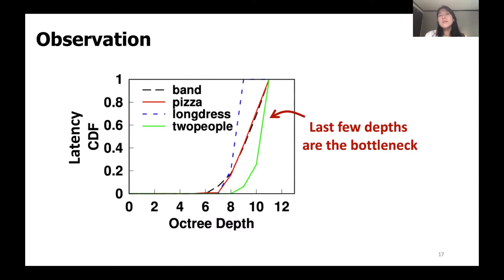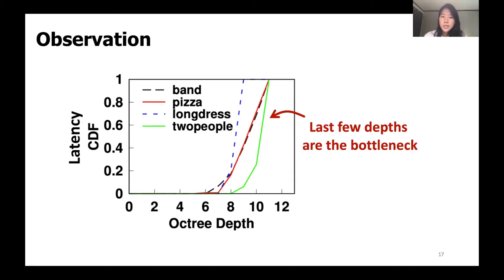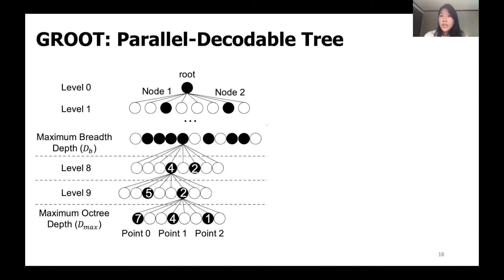This was a simple example, but we observed that when the tree goes deeper and the number of nodes increases, latency increases significantly. The cumulative distribution function of decoding latency shows that latency mainly resides in the last two to three depths, generating a bottleneck. This observation gives us insight to design a new compression scheme by modifying the data structure to generate a parallel decodable tree — PDTree.